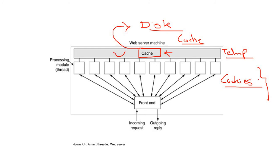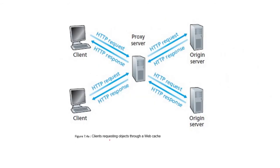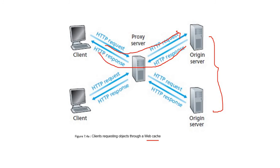I will explain in detail the types of cookies and how cookies work. A client requests objects through a web cache — it works like a proxy server. Whatever request arrives from the client side is forwarded to the origin server, and the response is sent back to the client. Whenever we are caching data from the proxy server, it works like a web cache.